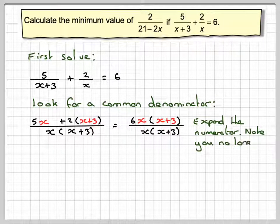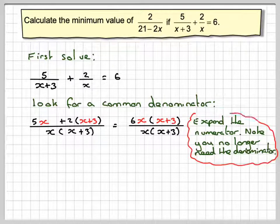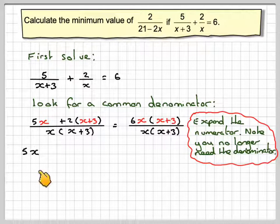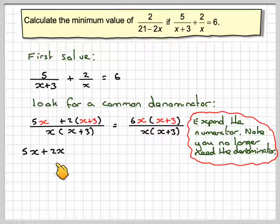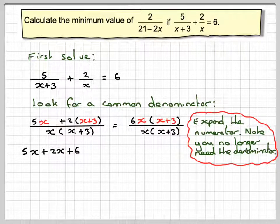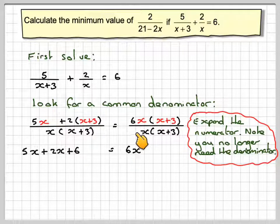Note, you no longer need the denominator. So that's going to be 5x plus 2 times x which makes 2x plus 2 times 3 which makes 6. And here we're going to get 6x squared plus 18x. This is a quadratic.